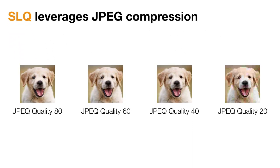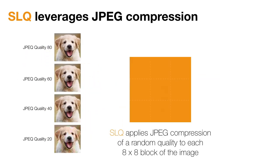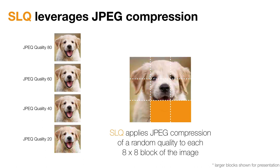SLQ leverages JPEG compression, which is a widely adopted image compression technique. JPEG has a parameter called the quality factor that controls the amount of compression performed. Higher the quality, lesser compression is applied. Lesser the quality, more compression is applied. Now let's take a look at how SLQ uses this. SLQ breaks up the image into 8px by 8px blocks and applies JPEG compression of a random quality factor to each block to create the final image.